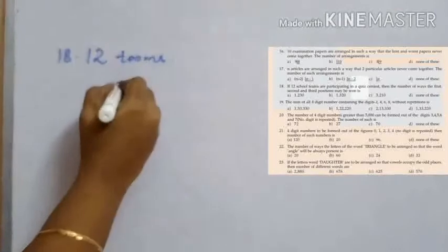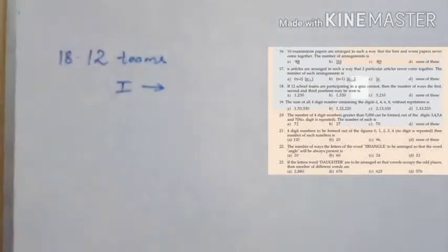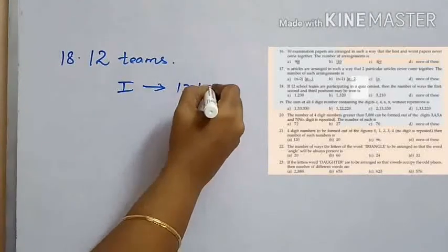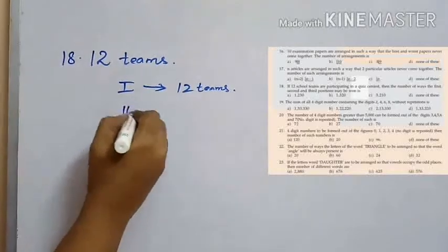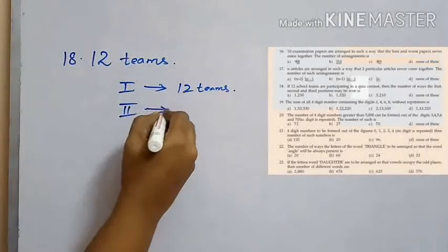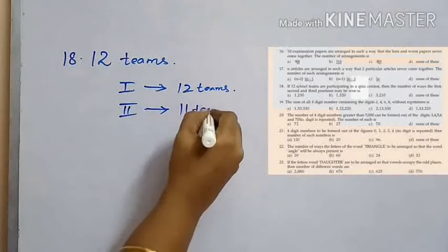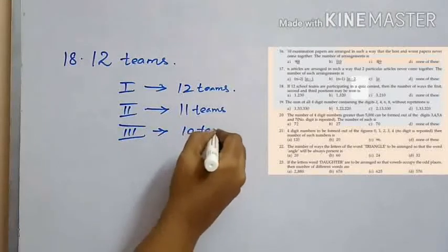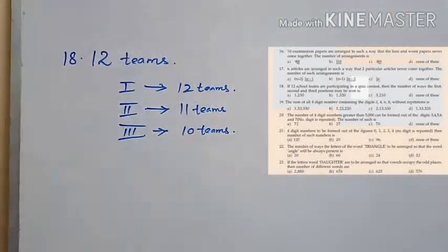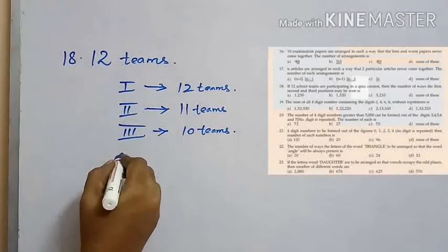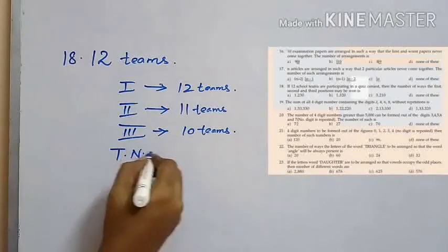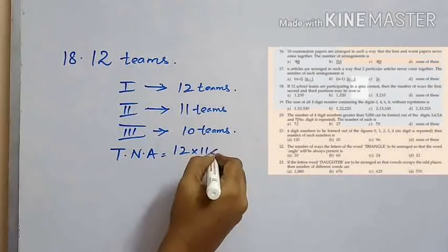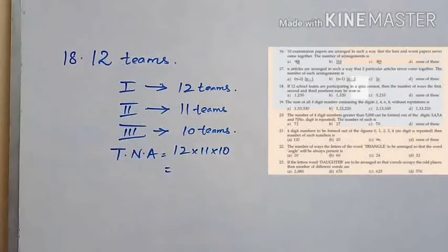Let's discuss question 18. If 12 school teams are participating in a quiz contest, the number of ways the first, second and third positions may be won is: out of 12 teams, the first position can be occupied by any of the 12 teams, the second position by any of the 11 teams, and the third position by any of the 10 teams. So the total number of arrangements is 12 into 11 into 10.